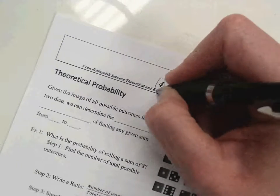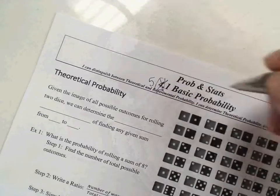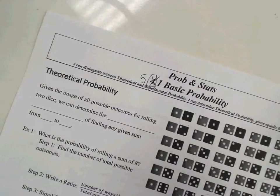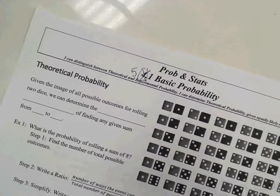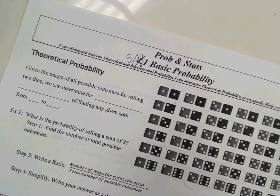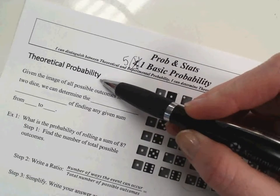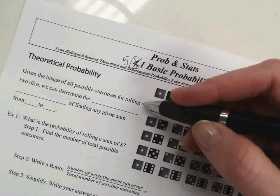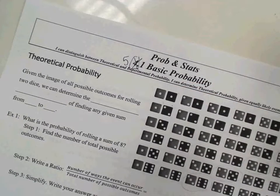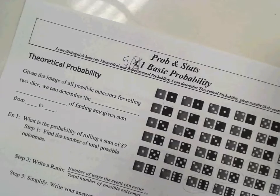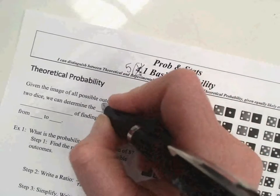This is unit 5, 5.1, basic probability. First of all, talking about theoretical probability. Given the image of all possible outcomes for rolling two dice, we can determine the theoretical probability of finding any given sum.